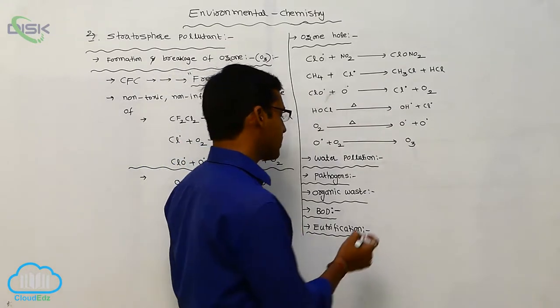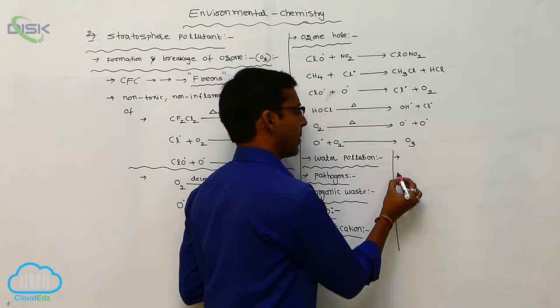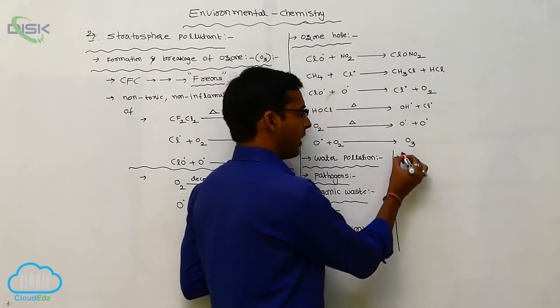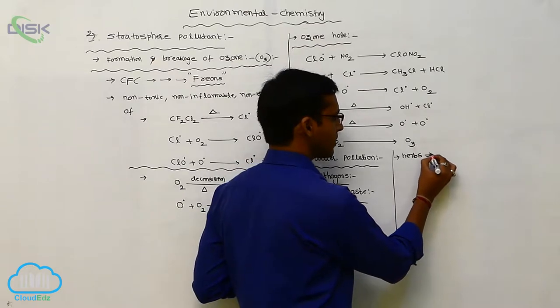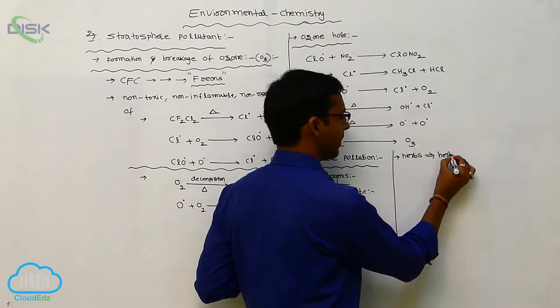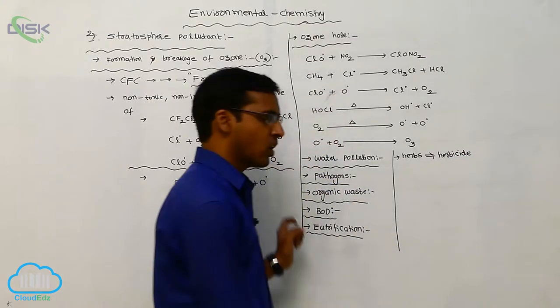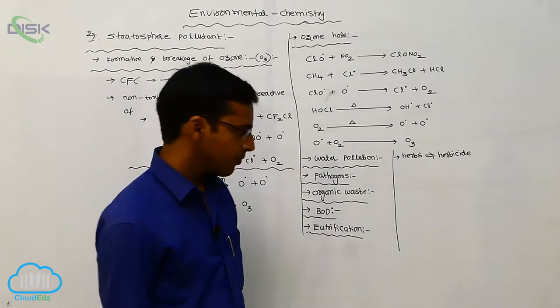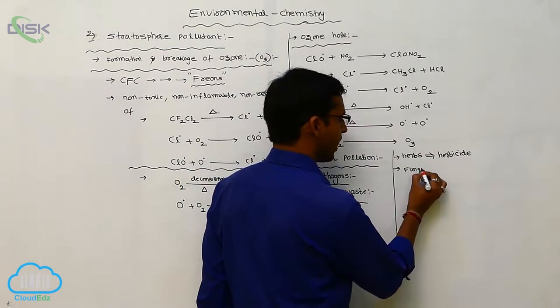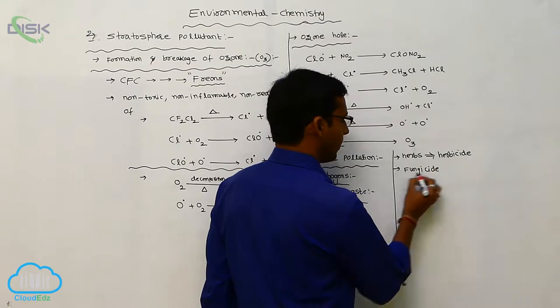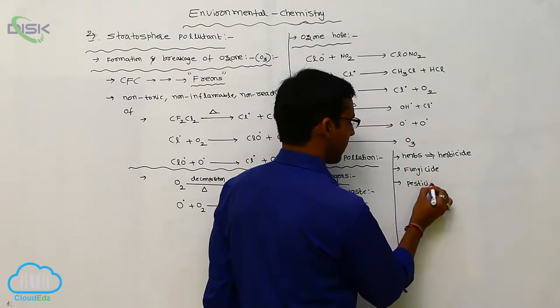And next one is killing of herbs. The killing of herbs is called herbicide. And the killing of fungi species is called fungicide. The killing of pests is called pesticide.